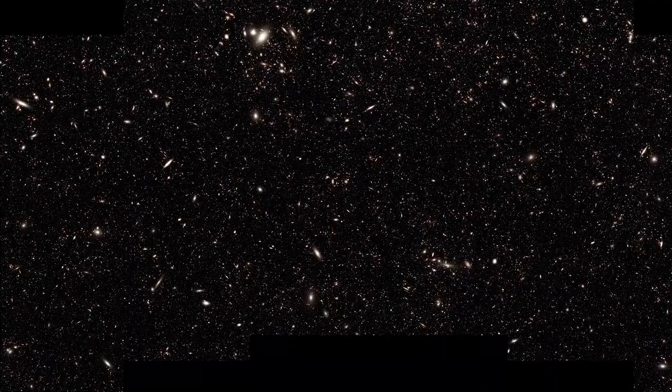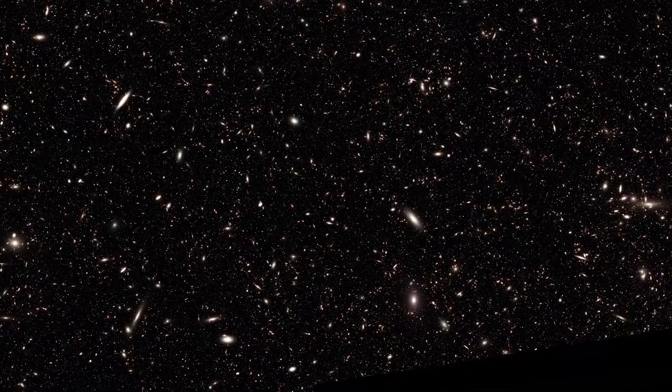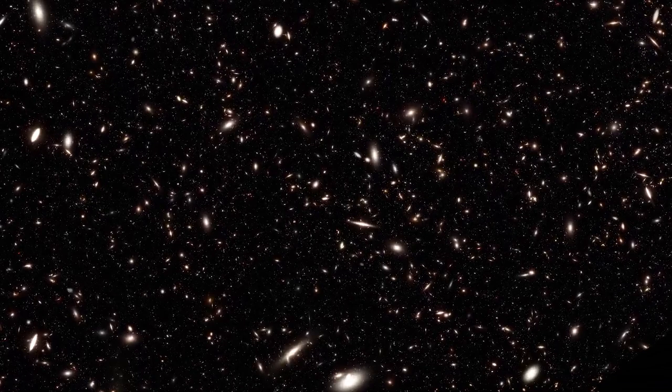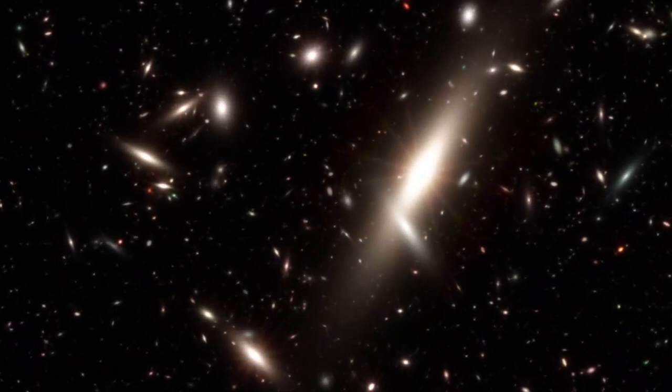This computer-generated image represents the distribution of galaxies that researchers expect to find based on the existing Hubble observations. It will help astronomers determine how best to conduct an actual Roman ultra-deep field, and anticipate the measurements and conclusions they might be able to make.